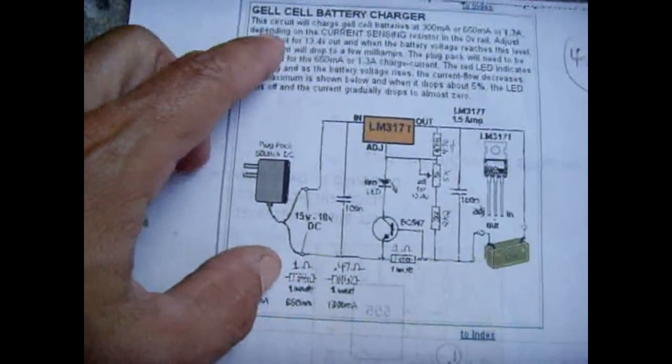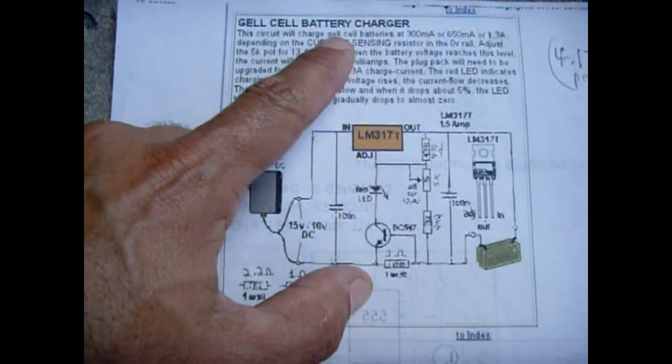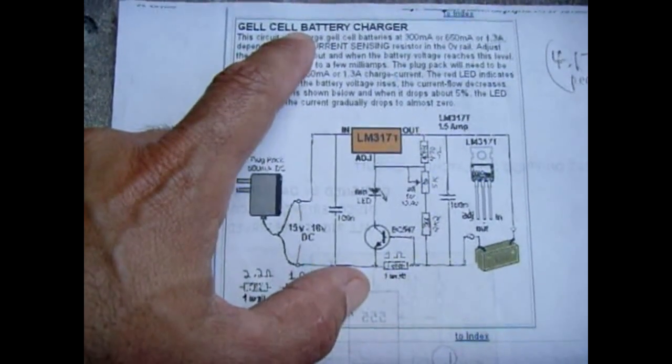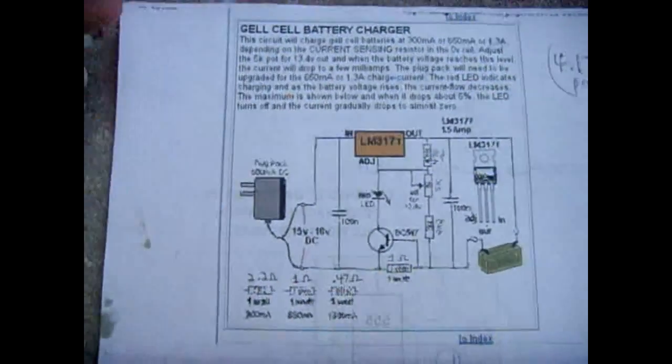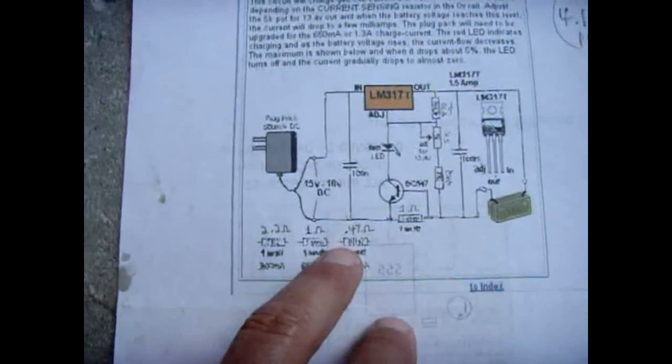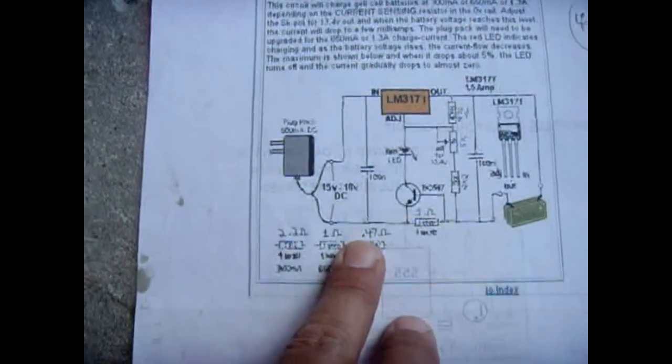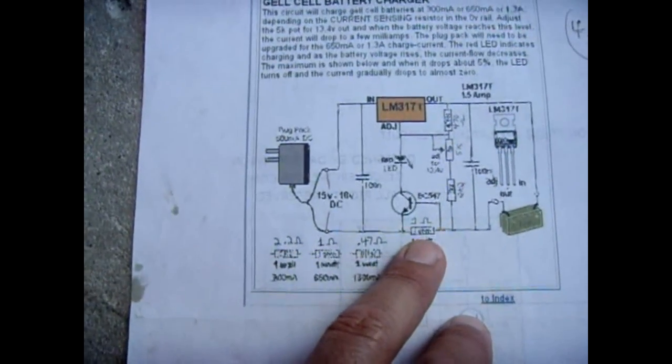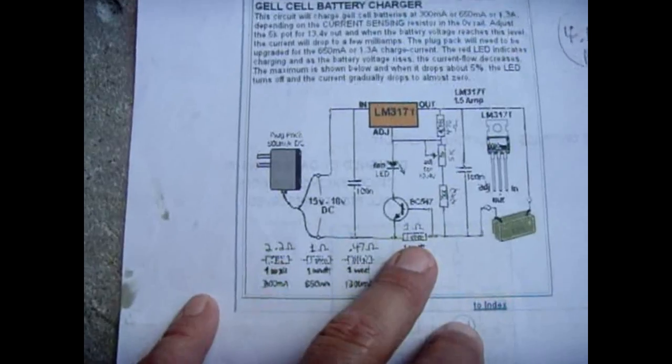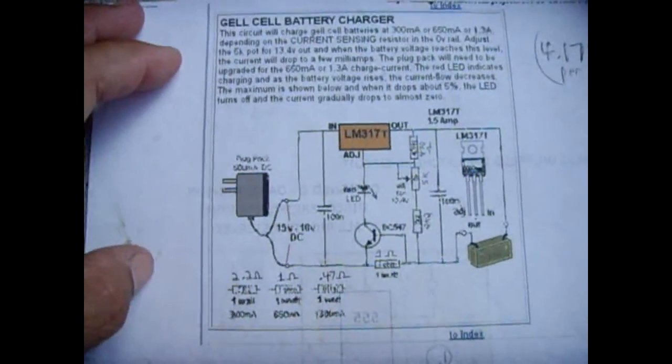Now it's designed as a gel cell battery charger, but you can use it for a gel cell, a regular lead-acid battery, or just about any battery you want, because with this you set the actual charging voltage, the maximum charging voltage, along with the maximum charging current, and it maintains that current until the very end of the charging cycle where it tapers off and stops.